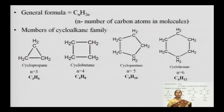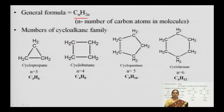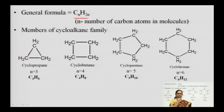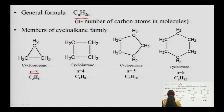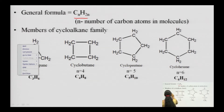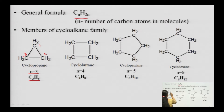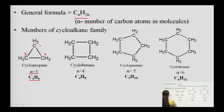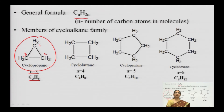The general formula of cycloalkanes is CnH₂n, where n is the number of carbon atoms in the molecule. For example, if n = 3, we have a 3-carbon chain — carbon 1, carbon 2, and carbon 3. Substituting into CnH₂n gives C₃H₆. This closed chain framework having 3 carbon atoms with formula C₃H₆ is cyclopropane.